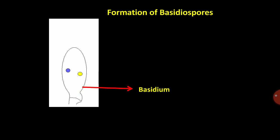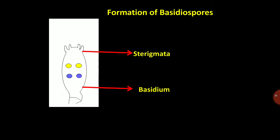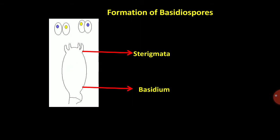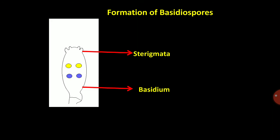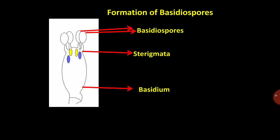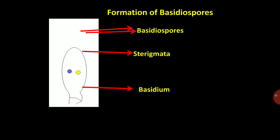Within the basidium, after karyogamy, meiosis produces four haploid nuclei which move through sterigmata to produce four basidiospores — two of one mating type and two of another (plus and minus).